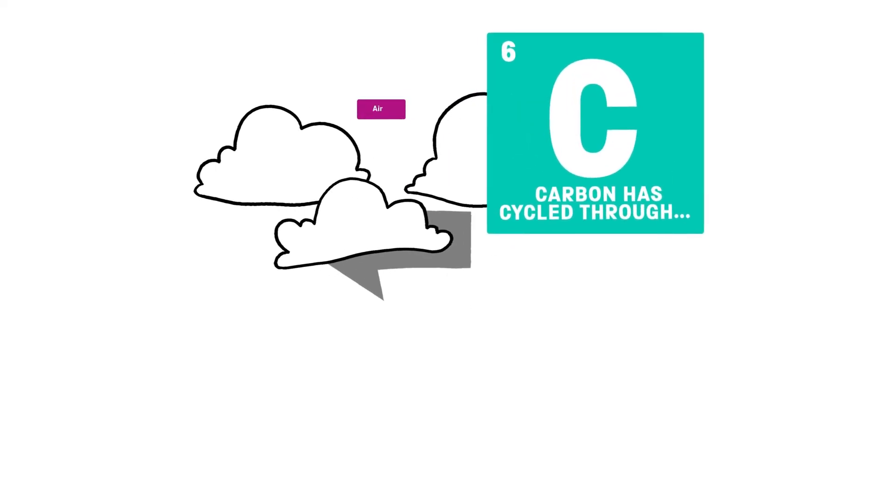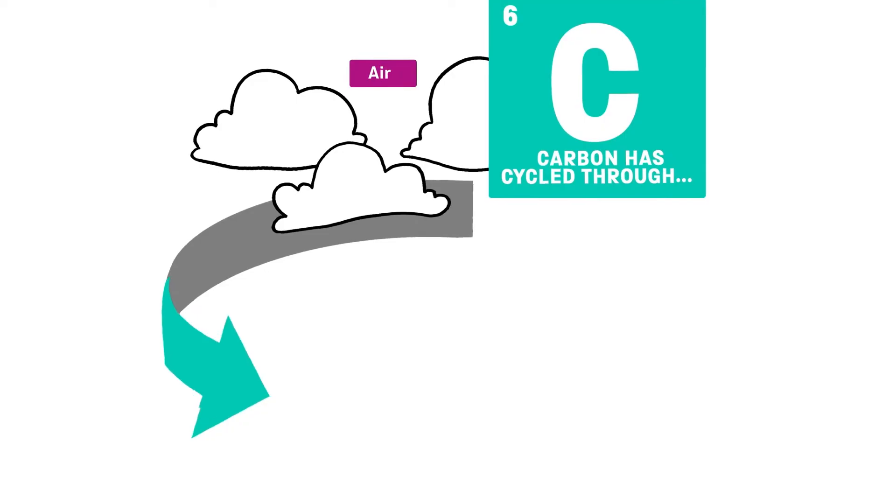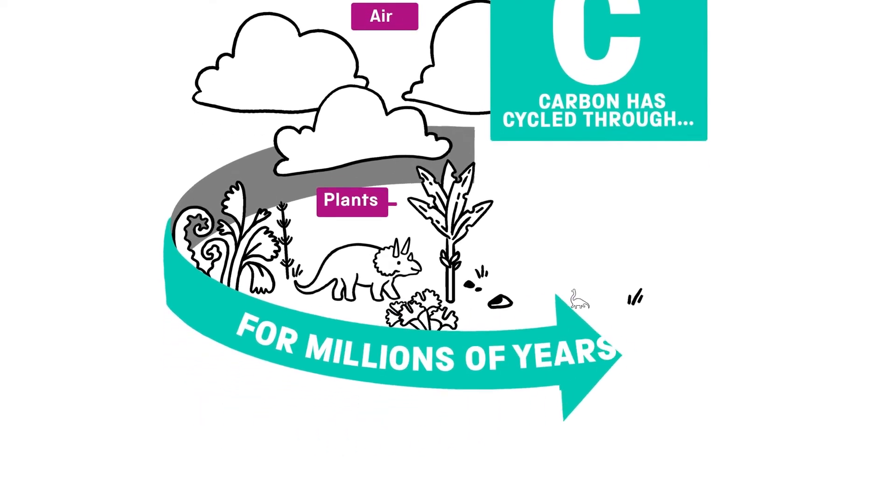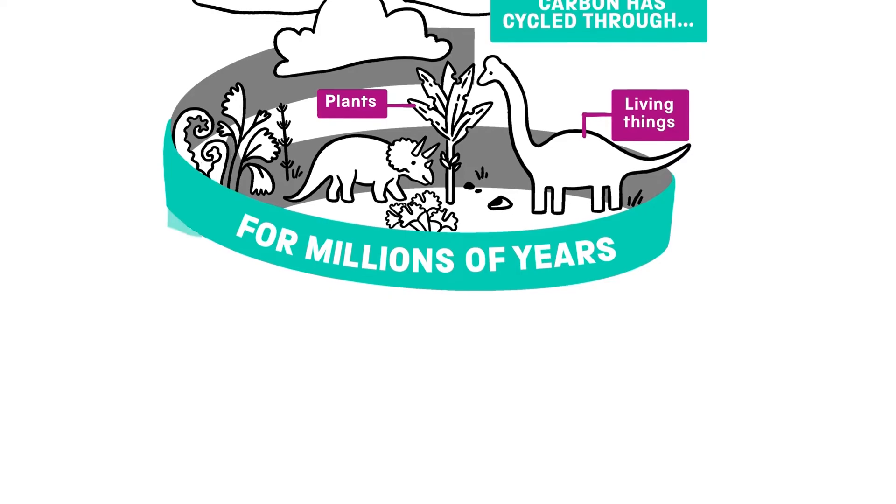Carbon has cycled through the air, oceans, land and living things for millions of years. This cycle allows the planet to sustain life.